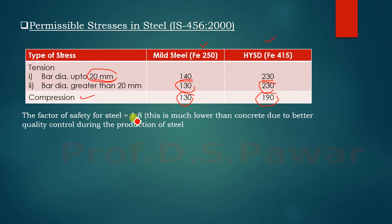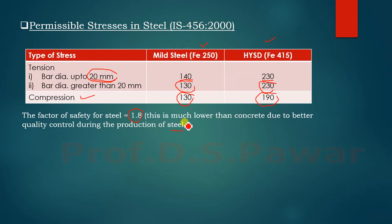The factor of safety for steel is 1.8, which is much lower than that for concrete. This is because of the better quality of control during the production of steel. There is less chance of steel losing its strength compared to concrete, where factors like batching and water-cement ratio introduce more variability. That is why the factor of safety for concrete is 3 and 4, while for steel it is 1.8 as given in IS 456-2000.